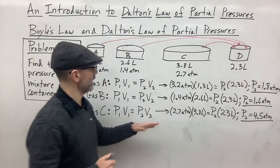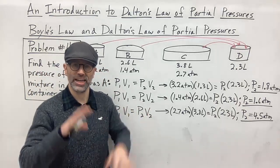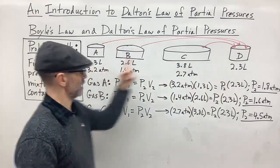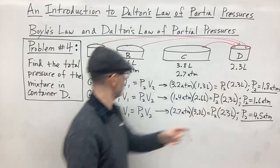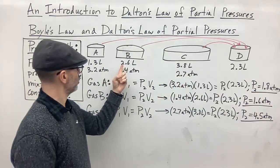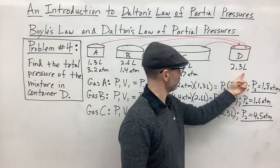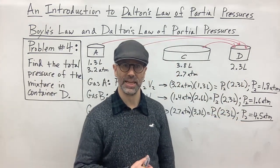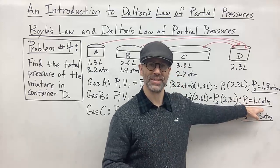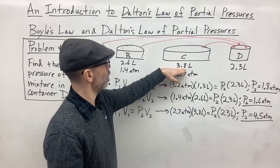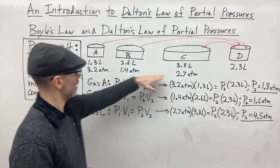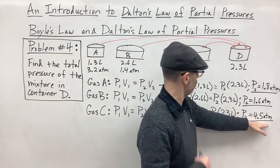This all makes sense because volume and pressure are inversely related. Gas A went from 1.3 liters to a larger 2.3-liter volume, so pressure decreased from 3.2 to 1.8 atmospheres. Gas B went from 2.6 to 2.3 liters — a slight volume decrease — so pressure increased slightly from 1.4 to 1.6 atmospheres. Gas C went from a large 3.8 liters to 2.3 liters, nearly half the volume, so pressure nearly doubled from 2.7 to 4.5 atmospheres.